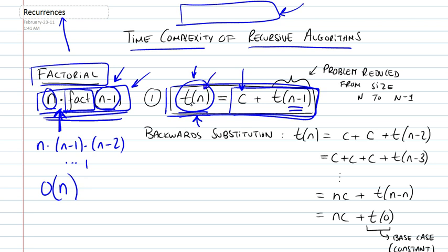So t of n, the number of steps involved in computing this factorial algorithm, would be c plus t of n minus 1, where n minus 1 is basically the reduced problem.